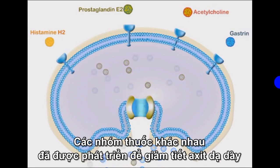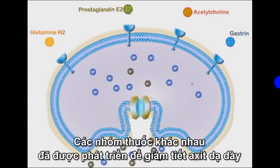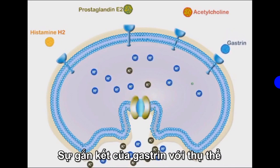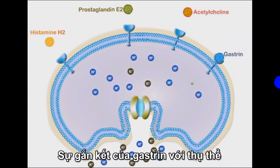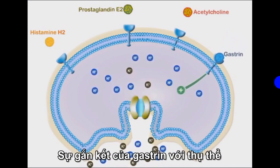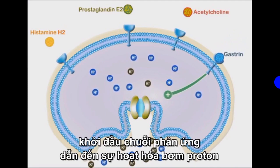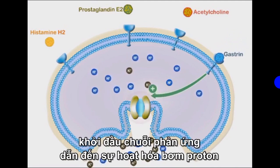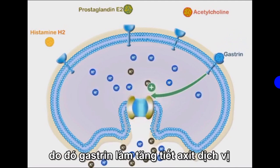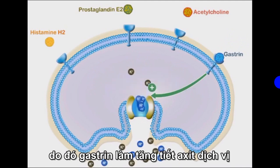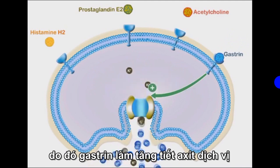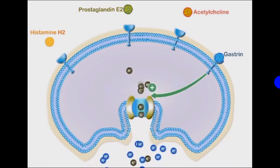Different groups have been developed to diminish gastric acid secretions. Binding of gastrin molecules to their receptors initiates cascades of reactions that result in the activation of proton pumps. Thus, gastrin increases gastric acid secretion.